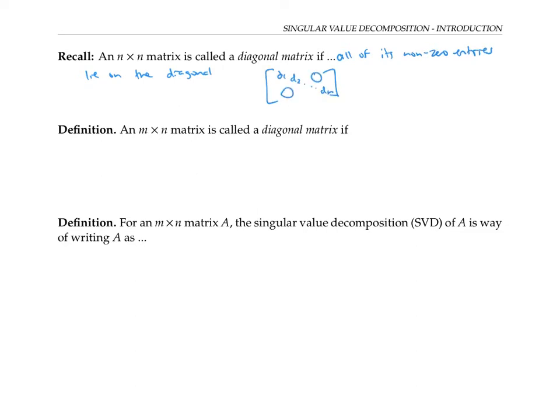We'll say that an m by n matrix where m and n might be different is called a diagonal matrix if all of its non-zero entries lie on its diagonal, where the diagonal entries are those whose row number and column number are the same. For example, here's a four by two diagonal matrix, and here's a three by five diagonal matrix.